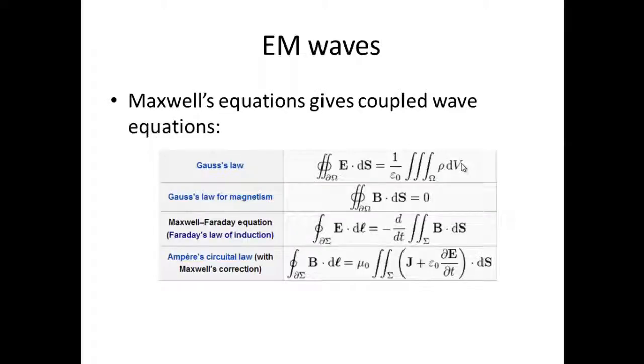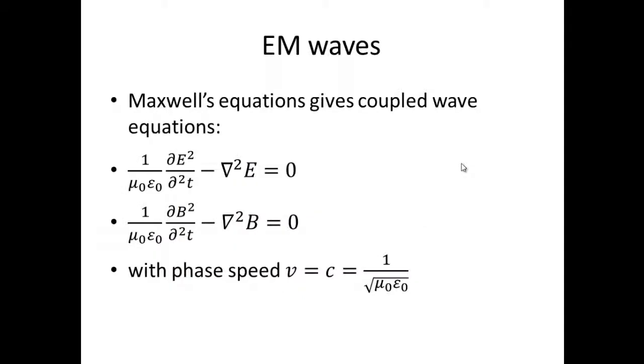You'll recall when we first discussed our wave equation, we also did the derivation for electromagnetic waves. A quick reminder, this is based on the four Maxwell's equations, which govern electric field and magnetic field. Combining all those, basically saying changing electric field gives rise to a magnetic field and changing magnetic field gives rise to an electric field, ultimately giving us two wave equations, one for the electric field and one for the magnetic field.